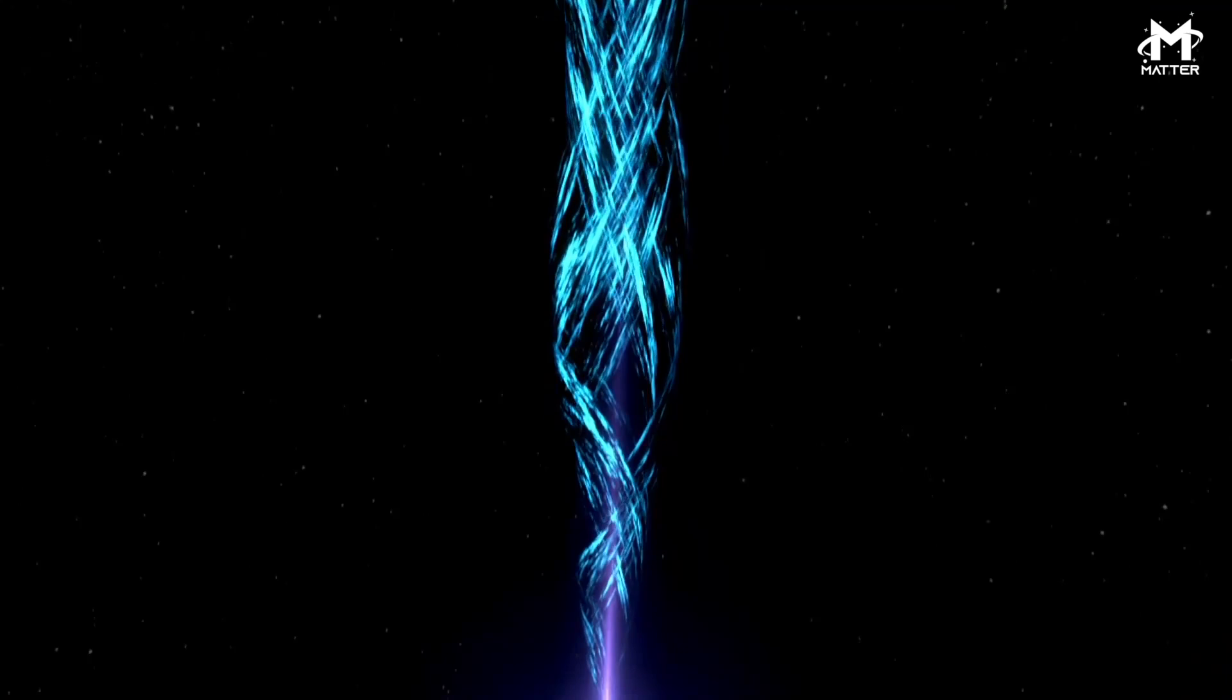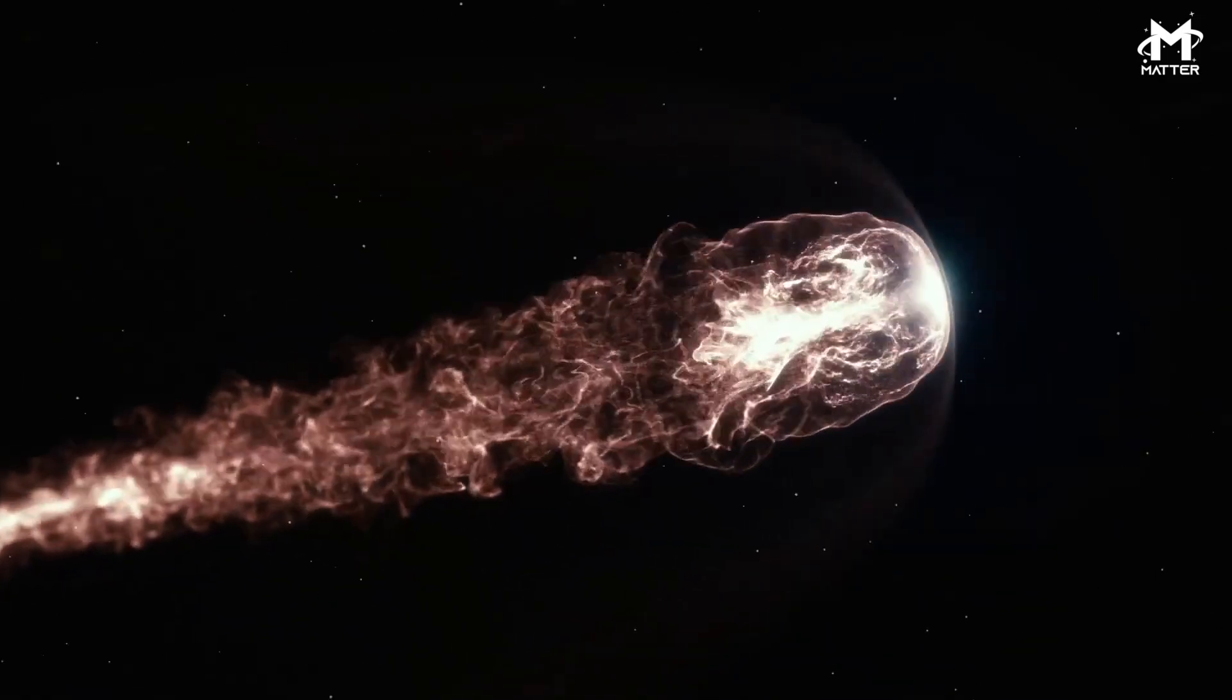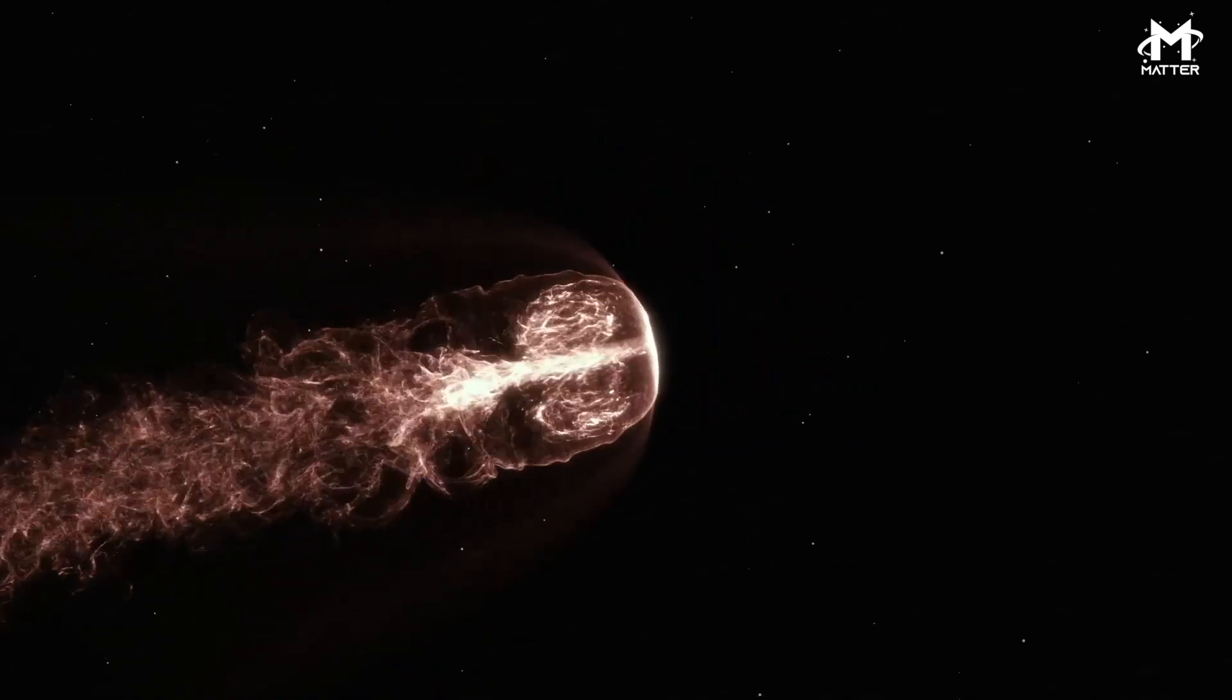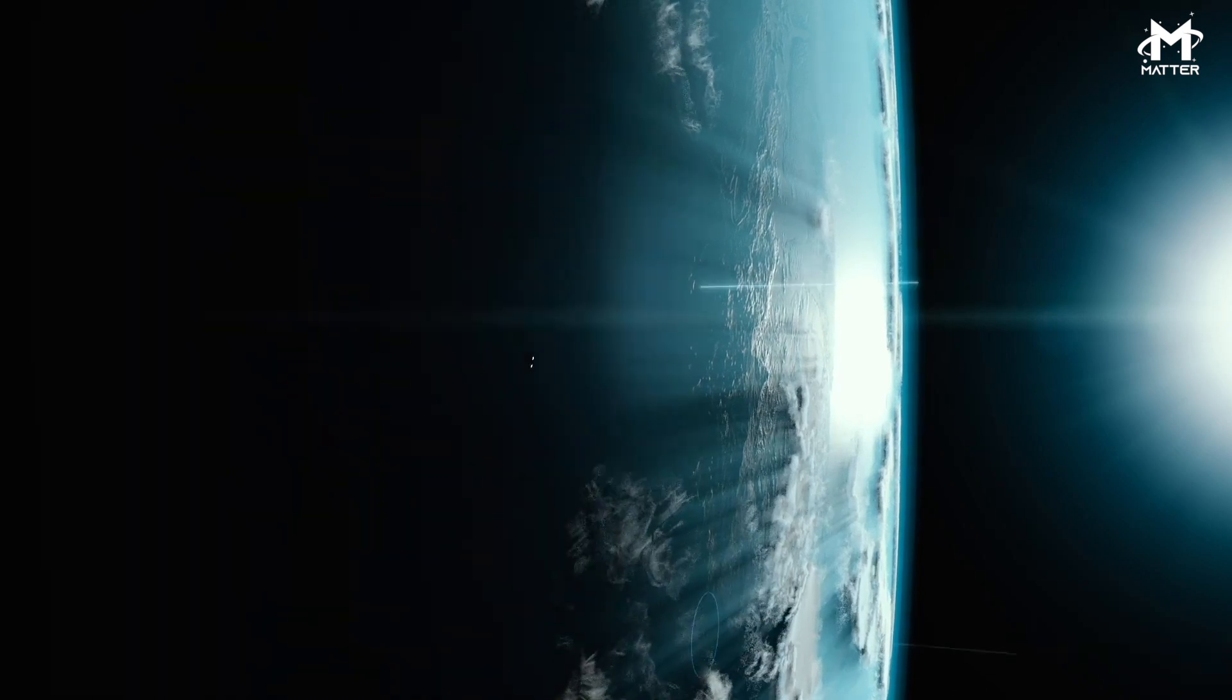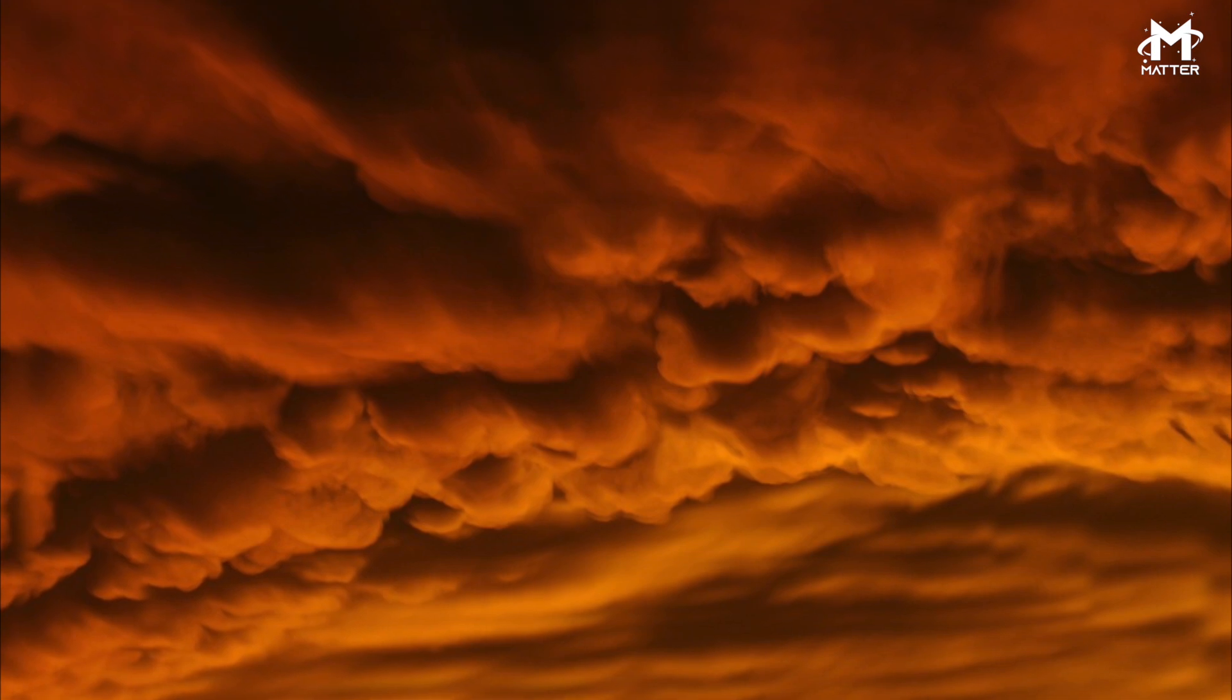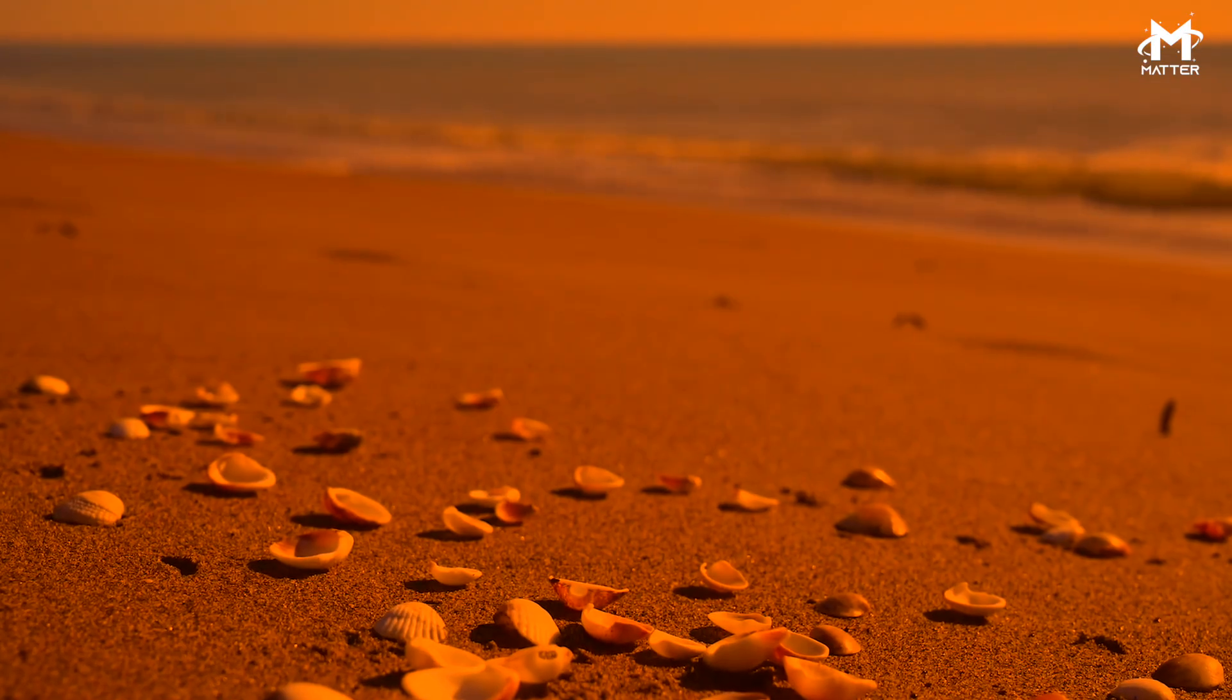However, supernovas generally emit that amount of energy over weeks, while a gamma-ray burst will release that amount of energy in seconds. These bursts are extremely dangerous, but the odds of one being pointed directly at the Earth are incredibly low. But if one was pointed towards Earth, it would cause all the nitrogen and oxygen in our atmosphere to combine into nitrous dioxide, turning the sky brown and threatening all life.